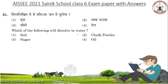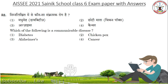Which of the following will dissolve in water? Which of the following is a communicable disease? Options: Diabetes, Chickenpox, Alzheimer's, Cancer. Answer is Chickenpox.